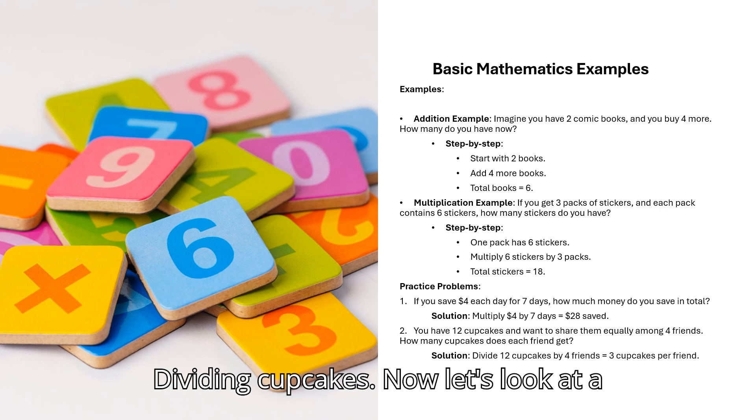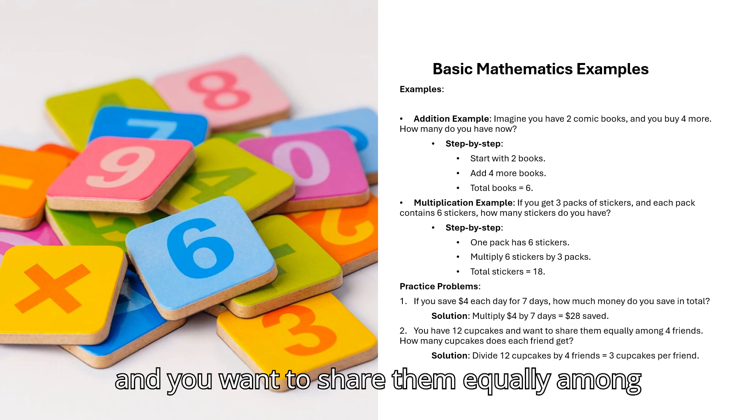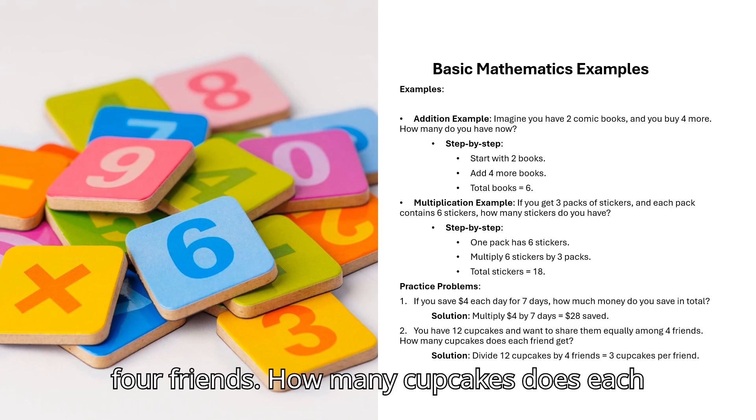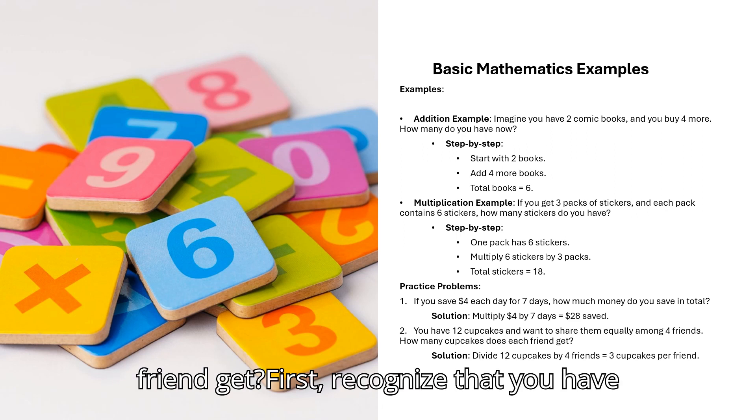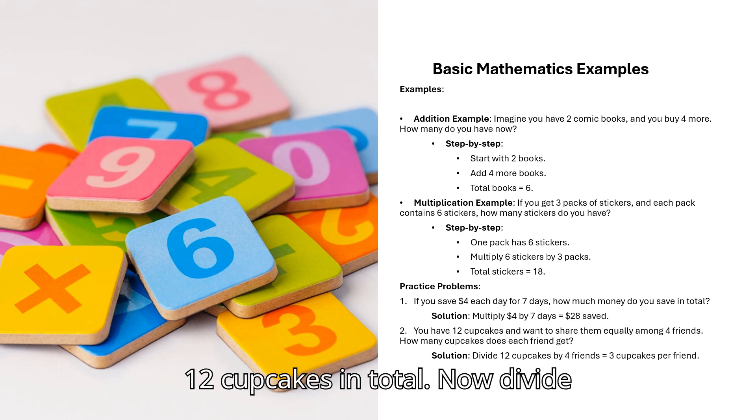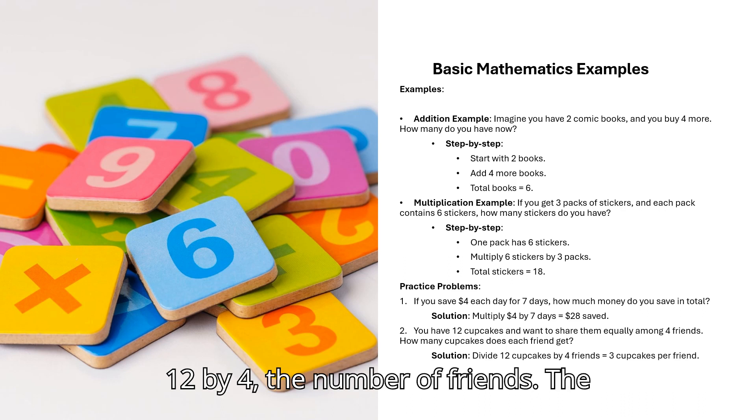Practice Problem 2: Dividing Cupcakes. Now, let's look at a division problem. You have 12 cupcakes, and you want to share them equally among 4 friends. How many cupcakes does each friend get? First, recognize that you have 12 cupcakes in total. Now, divide 12 by 4, the number of friends. The result is that each friend will get 3 cupcakes. So, 12 divided by 4 equals 3.